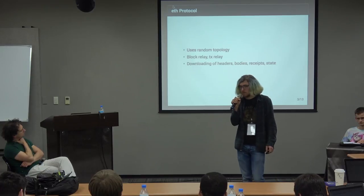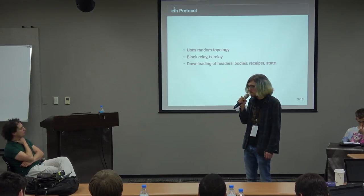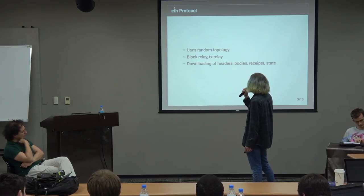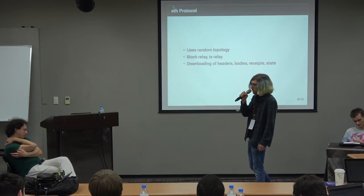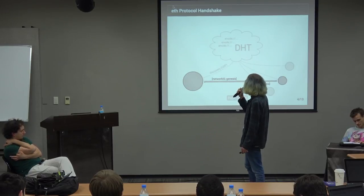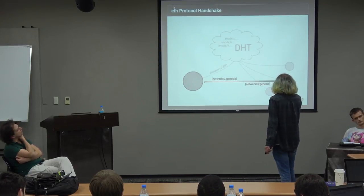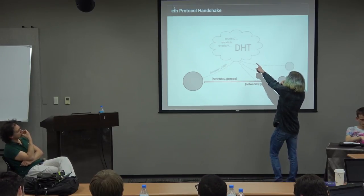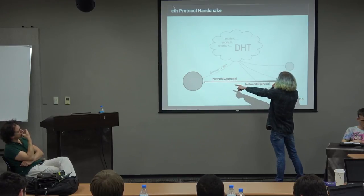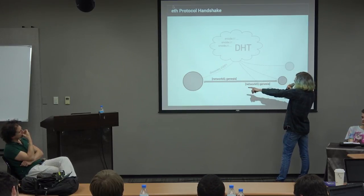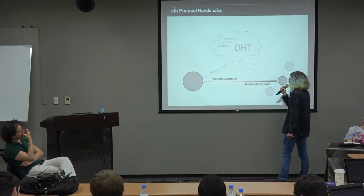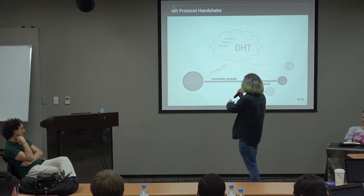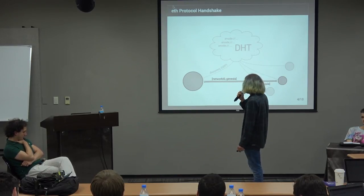With the ETH protocol you can relay new blocks, relay new or existing transactions, and download block headers, block bodies, receipts, and state data. When you connect to someone, you find a node using the DHT and then exchange information about the blockchain on the application layer — including the genesis block, network ID, and total difficulty from both sides.